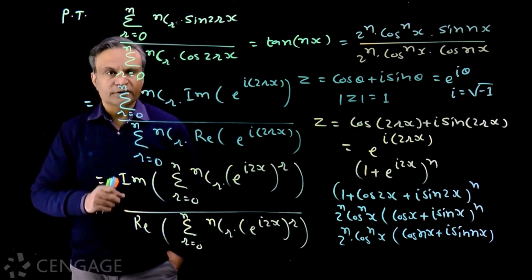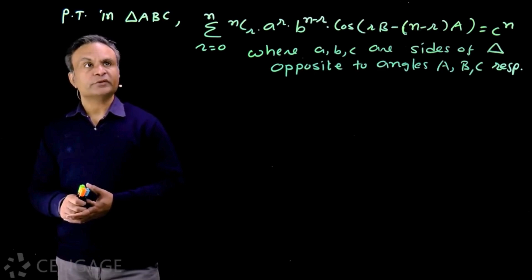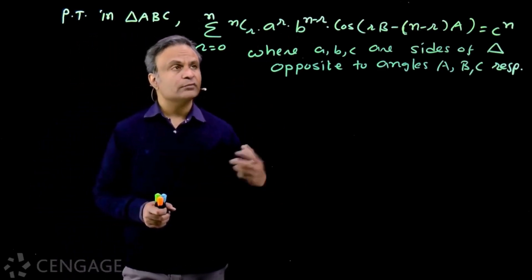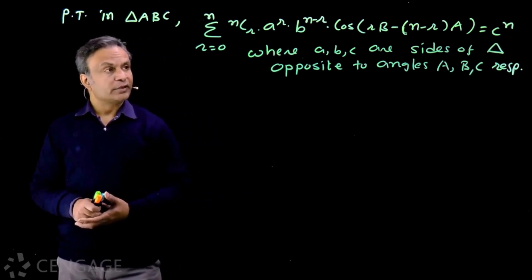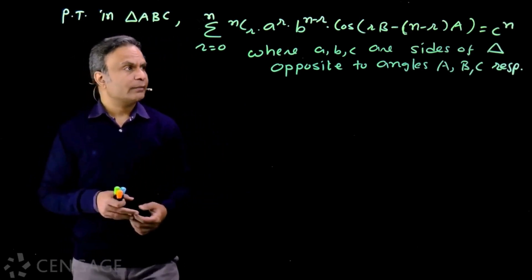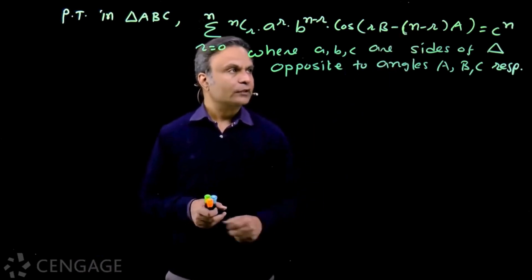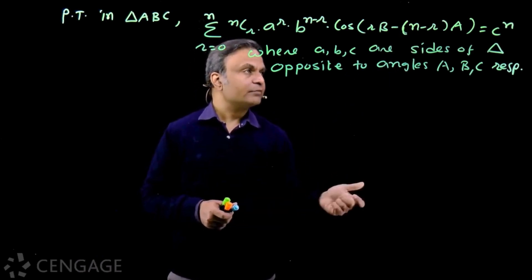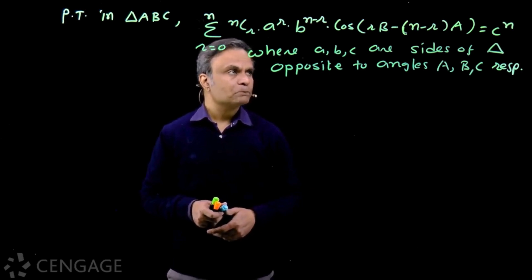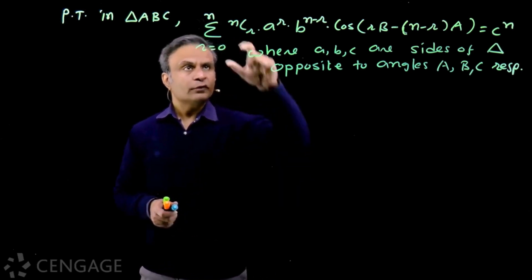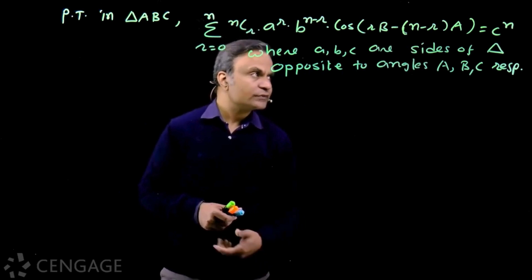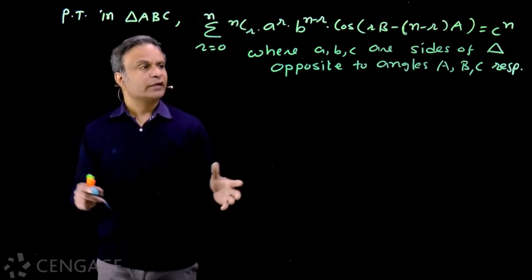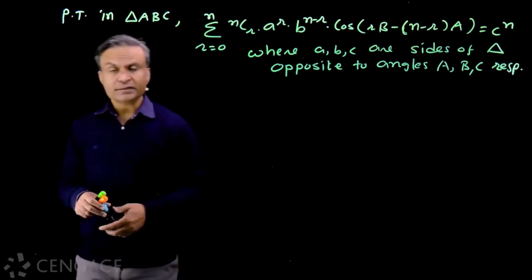Let us take one more question. In triangle ABC, prove that the sum of the series — sigma of nCr multiplied by a^r multiplied by b^(n−r) multiplied by cos(r·B − (n−r)·A) — is equal to c^n, where a, b, c are sides of the triangle opposite to angles A, B, and C respectively.